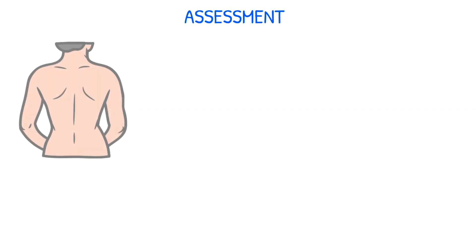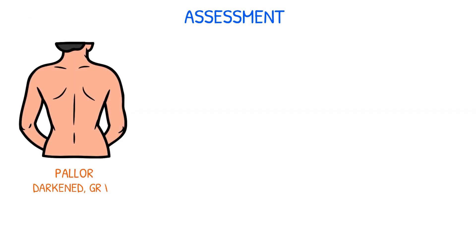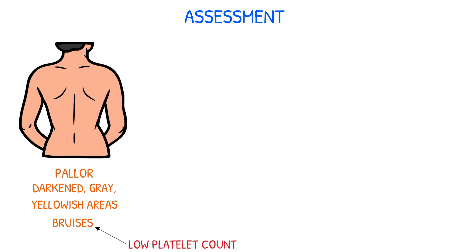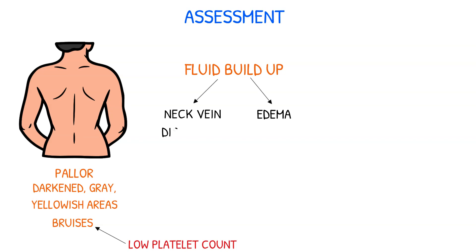Assess the patient's skin color for pallor, areas of darkened skin, as well as gray or yellowish areas. Assess for bruises as well, as acute kidney injury may lead to low platelet count. As fluids continue to build up in the body, edema and neck vein extension may manifest.